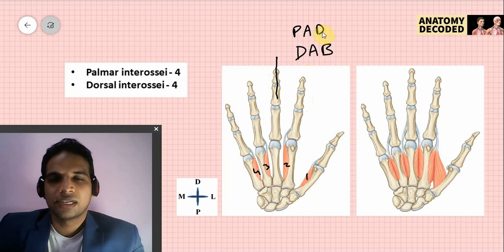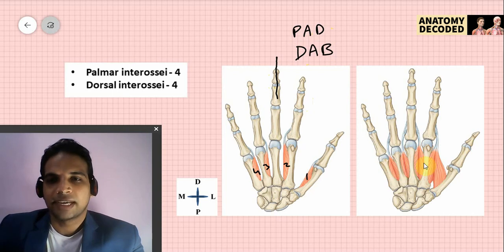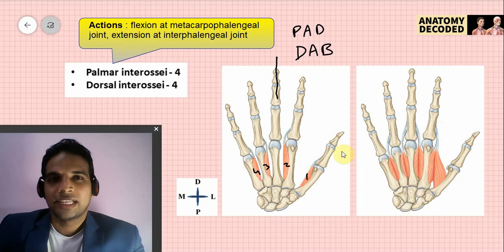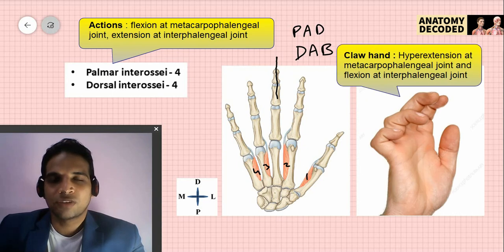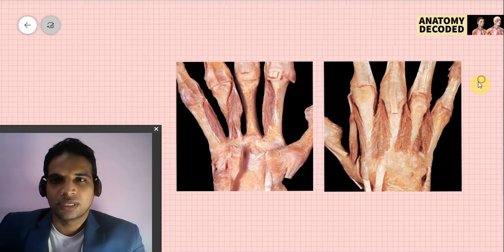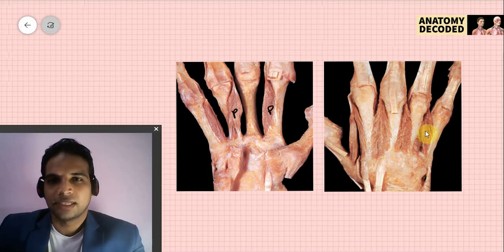Palmar interossei cause adduction — remember PAD — and dorsal interossei cause abduction — remember DAB. The dorsal interossei are bipennate muscles arising from the adjacent metacarpals, with distal attachment at the base of the proximal phalanx and onto the dorsal digital expansion. All interossei are supplied by the ulnar nerve. The actions of lumbricals and interossei are flexion of the metacarpophalangeal joint and extension at the interphalangeal joints. When paralyzed, the opposite occurs — a clinical condition called claw hand, with hyperextension of the MCP joint and flexion of the IP joints. Dissected images show palmar interossei with no interosseus on the middle metacarpal, and the dorsal interossei.